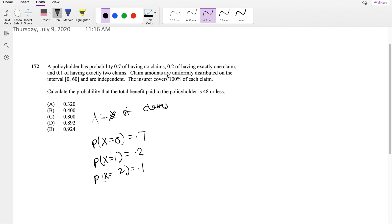And then they also tell you the claims are uniformly distributed on the interval 0 to 60 and are independent. The insurer covers 100% of the claim. And then they're saying, what is the probability the total amount of benefit paid to the policyholder is less than 48? I'm going to denote y is equal to the amount of payment, total benefit.